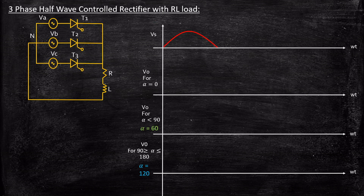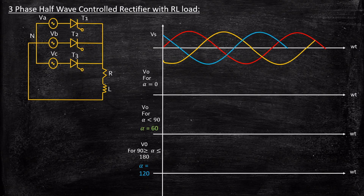Let us consider three-phase sinusoidal voltage. Each phase is displaced by an angle equal to 120 degrees. The red one indicates phase A, the yellow one indicates phase B, and the blue one indicates phase C, and the angle at each of these points is indicated here.